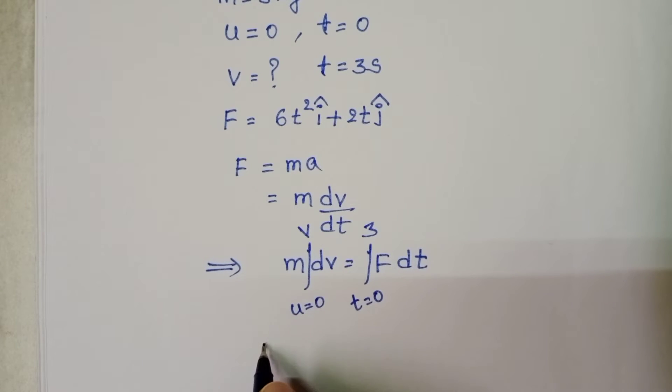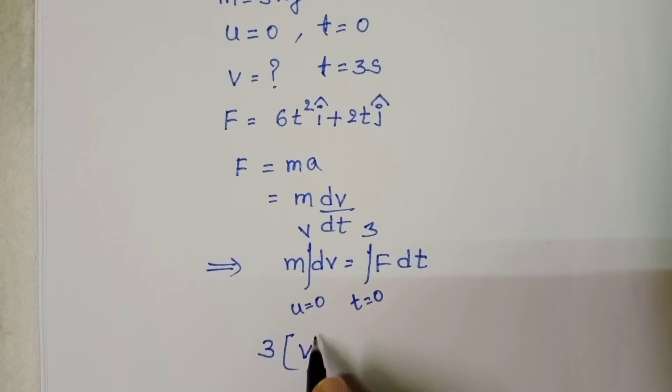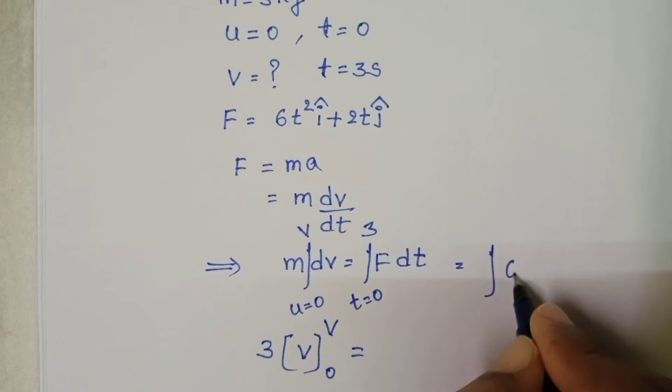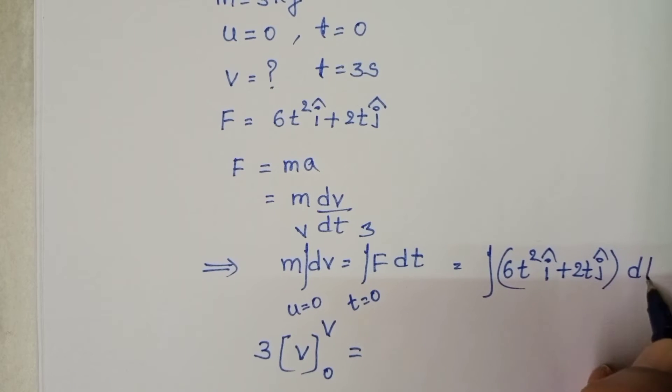Mass constant 3 kg, integral dv equals v with limits from 0 to v. In place of F, substitute 6T² î + 2T ĵ into dt.